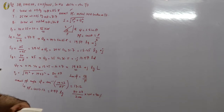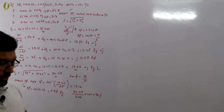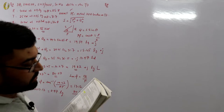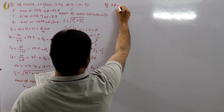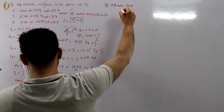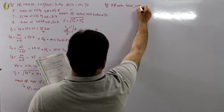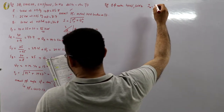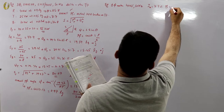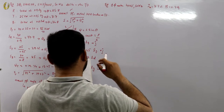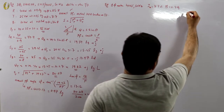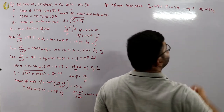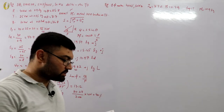Now example number 6.2 from the book: a single-phase motor connected to a 400 volt, 50 Hz supply takes a current of 31.7 amperes at a power factor of 0.7 lagging. Calculate the capacitance required in parallel with the motor to raise the power factor to 0.9 lagging.